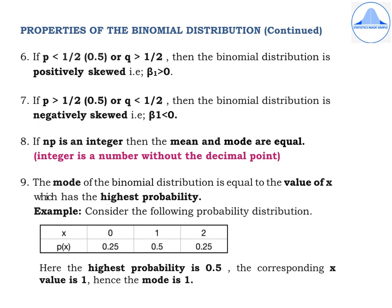The sixth property: when P < 0.5 (so Q > 0.5), the binomial distribution is positively skewed (β₁ > 0), meaning the right tail is longer than the left. The seventh property: when P > 0.5 (so Q < 0.5), the distribution is negatively skewed (β₁ < 0), meaning the left tail is longer. In summary, only when P = 0.5 is the distribution symmetric.